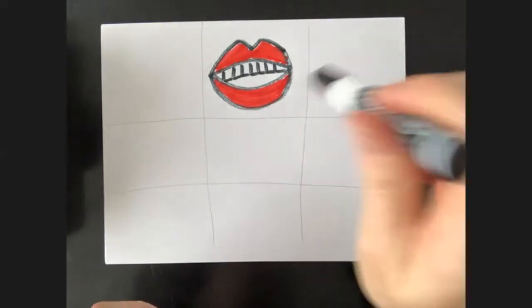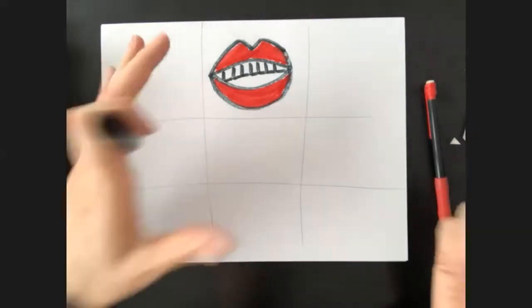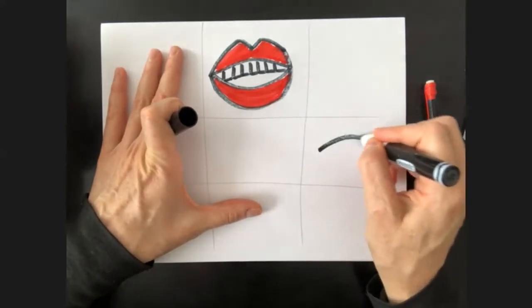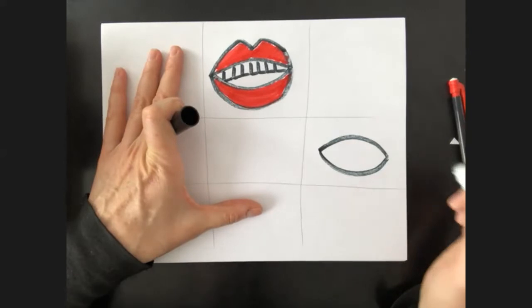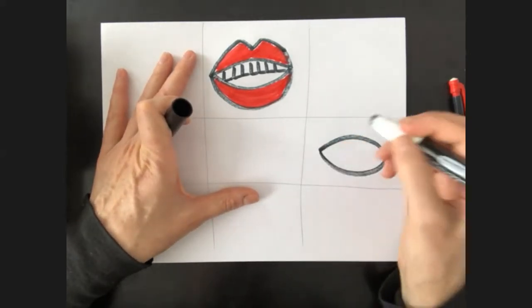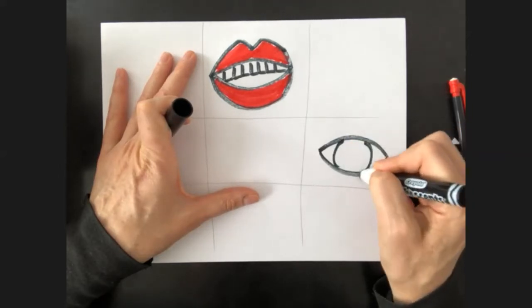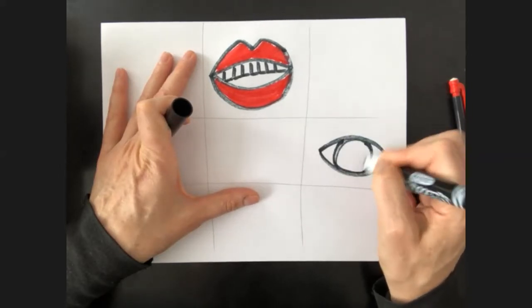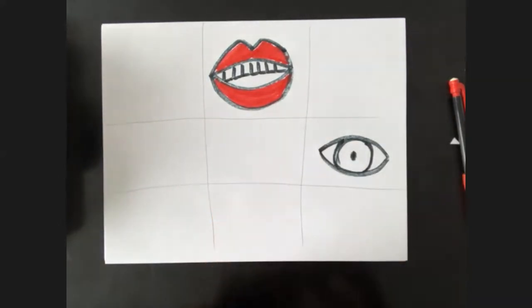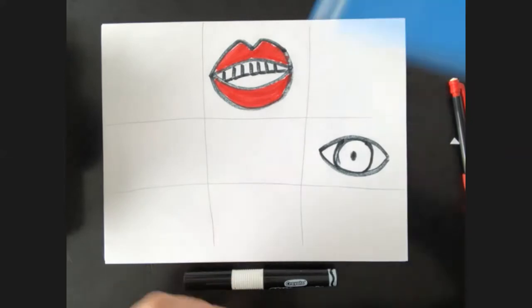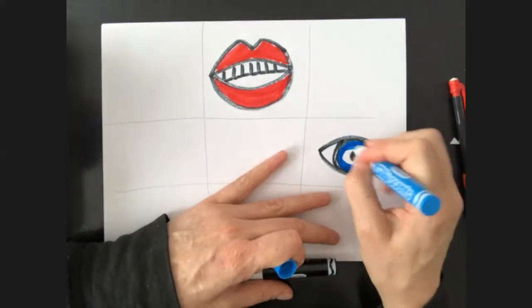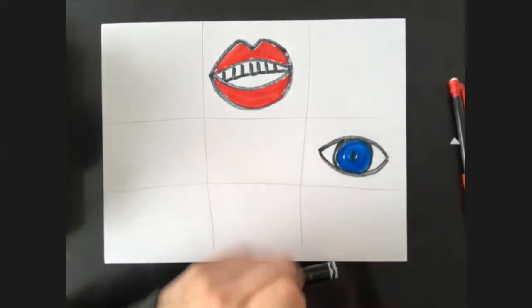So in another square, you're gonna draw an eye. For an eye, I like to do like, it kind of looks like a seed. So it's kind of pointed on both ends. And then in the center, you do kind of that circle where the color of your eyes, the center of that is black. Maybe I'll do, because my eyes are blue, do this.